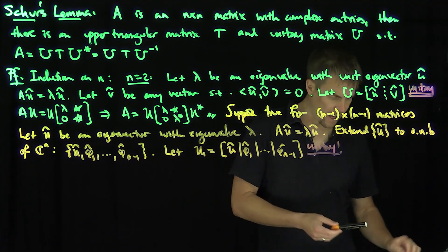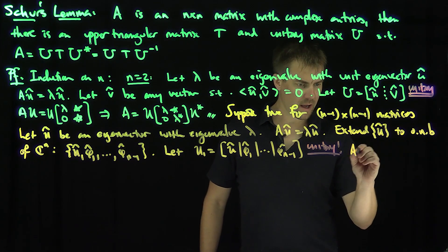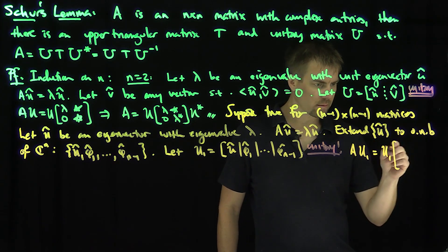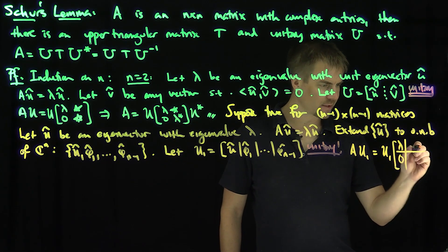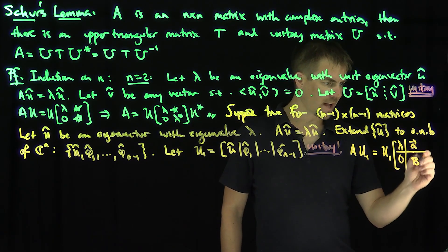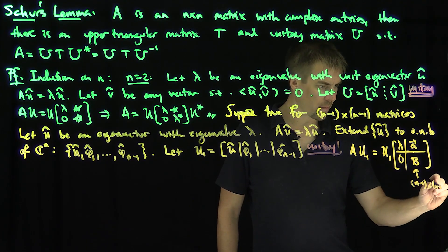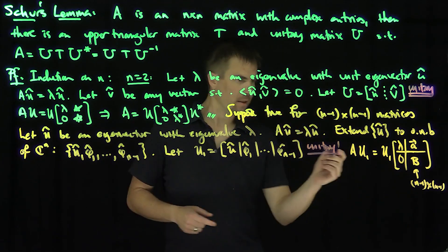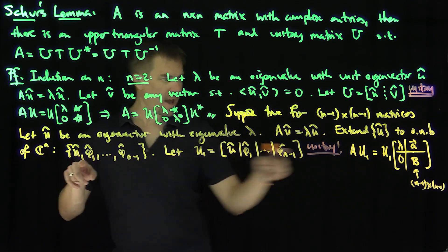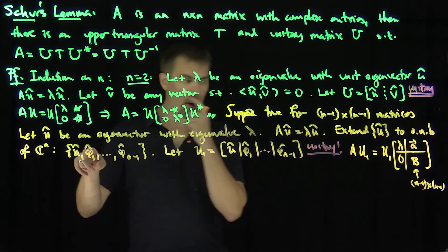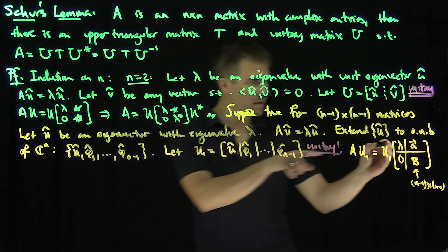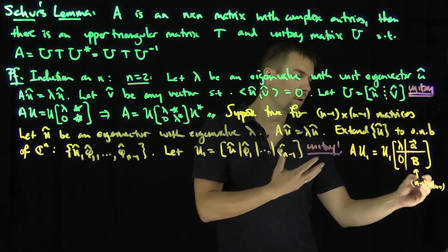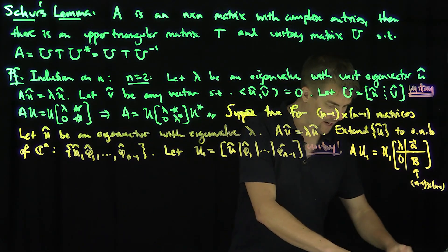Now let's look at A applied to U1. Since u-hat is an eigenvector, the first column gives lambda with all zeros beneath it. To the right of lambda in the first row there's some unknown vector A, and in the lower-right block there's an (n-1)-by-(n-1) matrix B. So U1* A U1 has the block structure: [lambda, A; 0, B], where B is an (n-1)-by-(n-1) matrix. Now I'm going to apply the induction hypothesis to this matrix B.